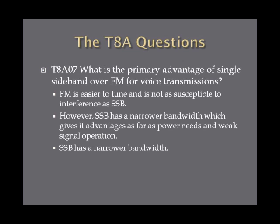What is the primary advantage of single sideband over FM for voice transmissions? The answer on the exam is that single sideband has a narrower bandwidth. FM is easier to tune and is not as susceptible to interference as single sideband. However, single sideband has a narrower bandwidth, which gives it advantages in power needs and weak signal operation.